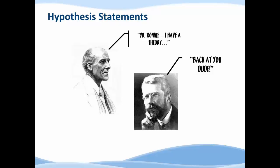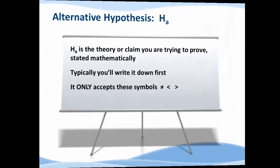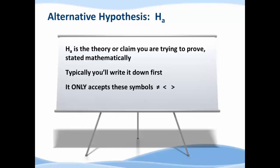Let's take a look at hypotheses. There are two hypotheses: alternative hypothesis and null hypothesis. We'll start with the alternative hypothesis Ha - H for hypothesis, a for alternative. This is the theory or the assumption that you're trying to prove, but we state it mathematically.